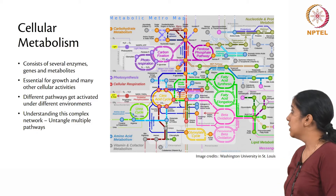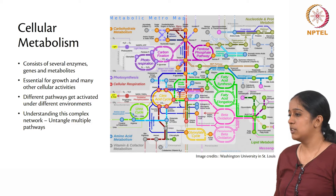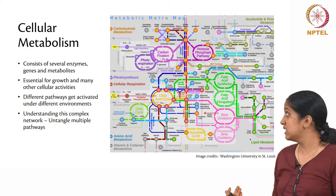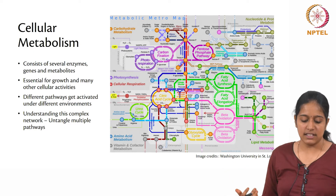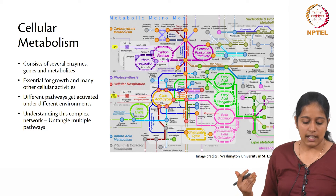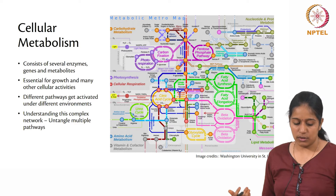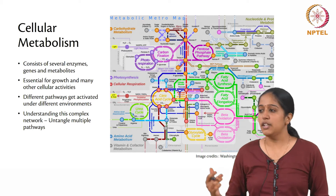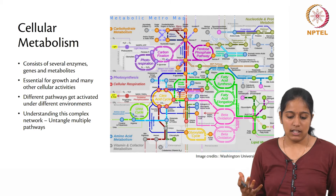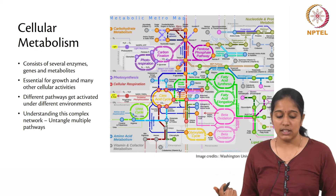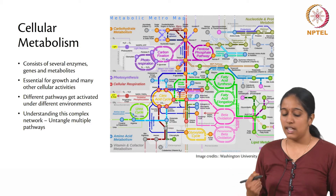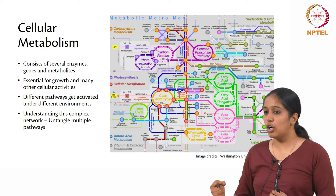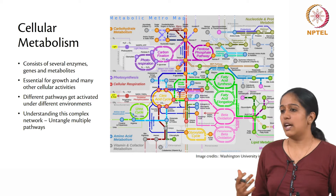To start with, as we all know, cellular metabolism is a complicated and complex machinery which involves several enzymes, genes and metabolites. A lot of these enzymes take part in different reactions and give rise to several metabolites which are essential for growth and regulate other cellular activities. The cells have evolved different pathways to metabolize different carbon sources under different environments, and to understand these we need to untangle multiple pathways and see how carbon gets incorporated into the biomass to see how the cell actually survives.